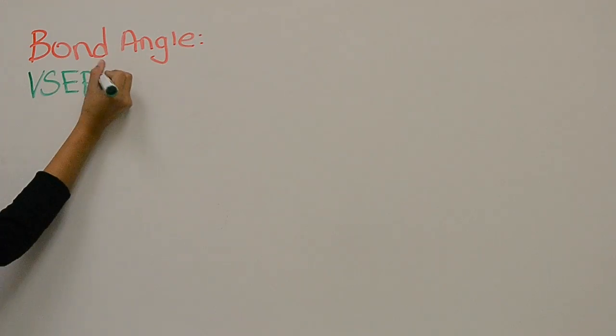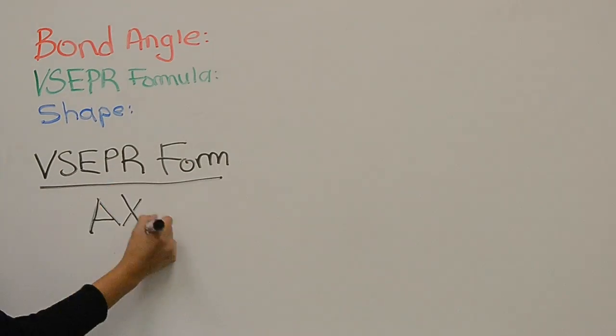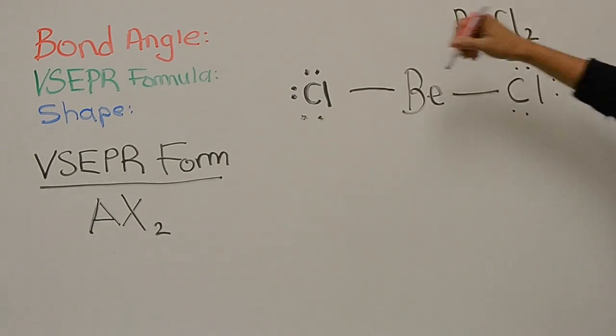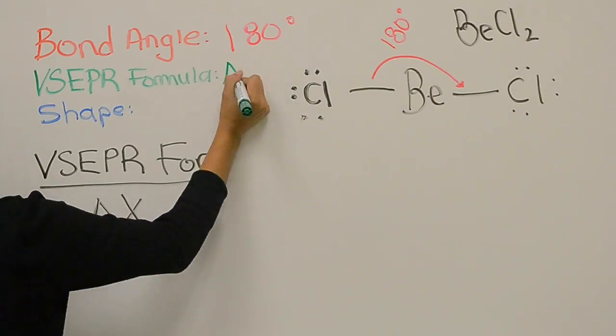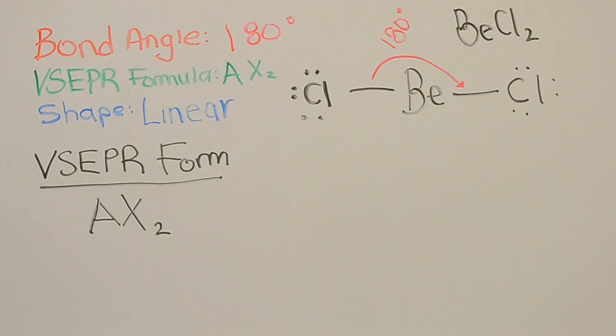Let's define the VSEPR form for beryllium chloride. Since there are two sigma bonds and no lone pairs, it will be AX2 with a bond angle of 180 degrees. This shape is called a linear shape.